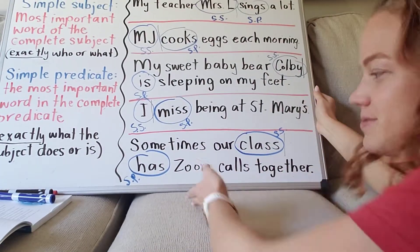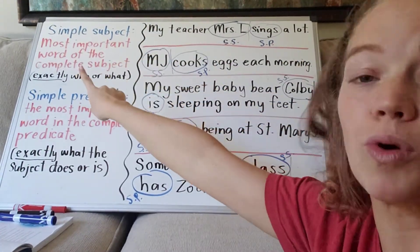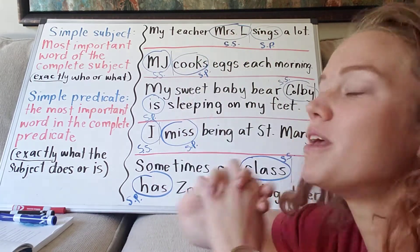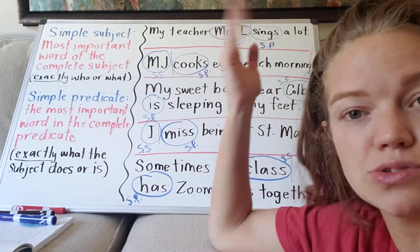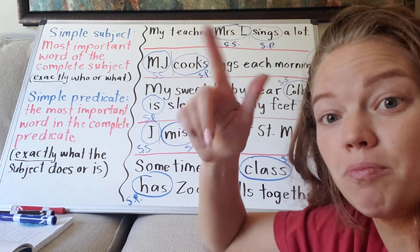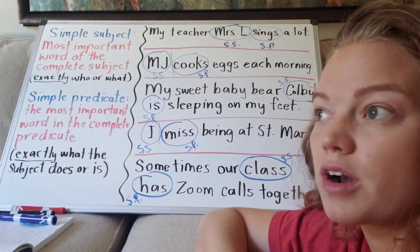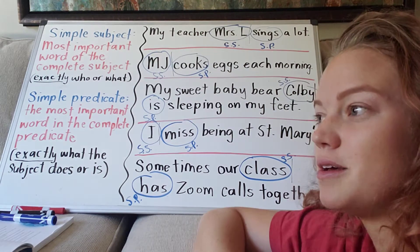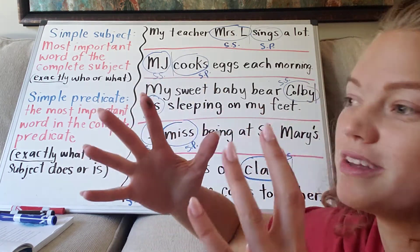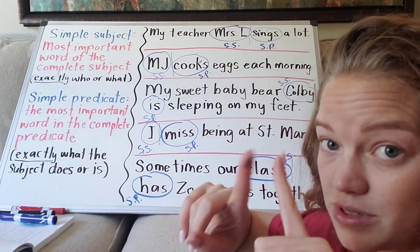Let's look over it one more time. Simple subject is the most important word of the complete subject — exactly who or what. 'My sweet baby bear Colby' — exactly who? Colby, without all the extra description. Last week's example: 'my neighbor Bill' — Bill. If I said 'my neighbor Bill mows his lawn' — Bill mows. Mr. Morton wrote Pearl a poem — Mr. Morton wrote. Pearl replied in the afternoon — Pearl replied. Sometimes there's more added on to the subject side, sometimes to the predicate side, but the simple subject and simple predicate stay the same. We need to be able to identify which one each is.